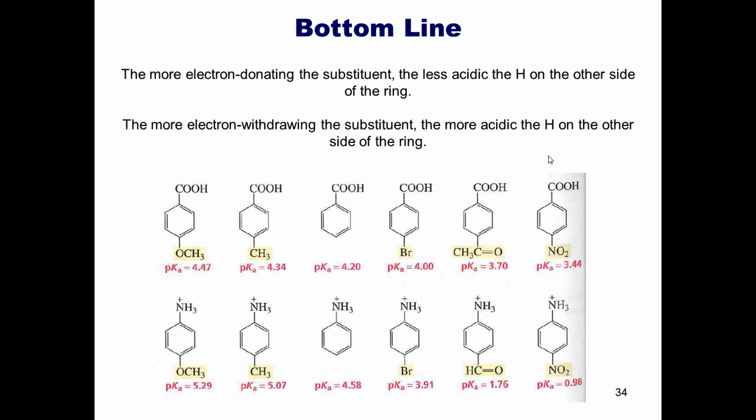So what's the bottom line? The more electron donating the substituent, the less acidic the hydrogen will be on the other side of the ring. The more electron withdrawing the substituent, the more acidic the hydrogen will be on the other side of the ring.